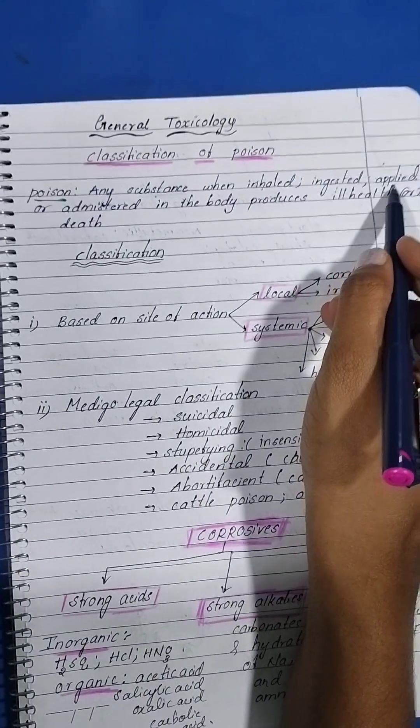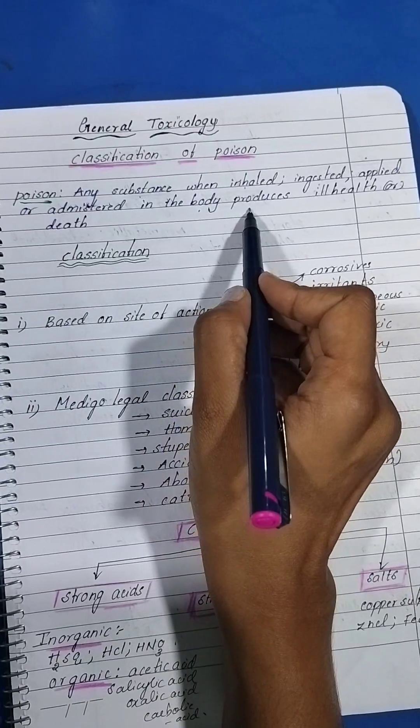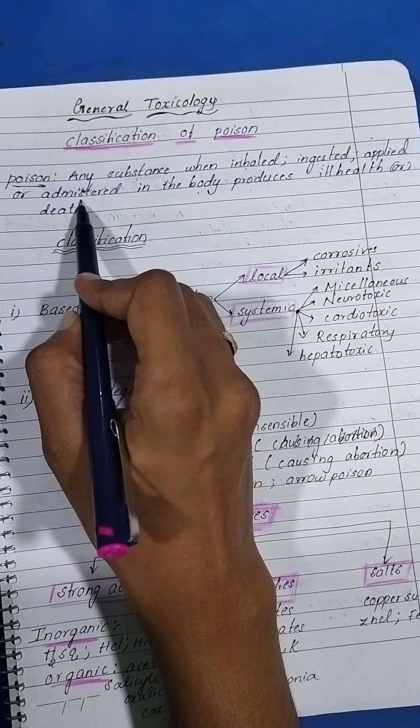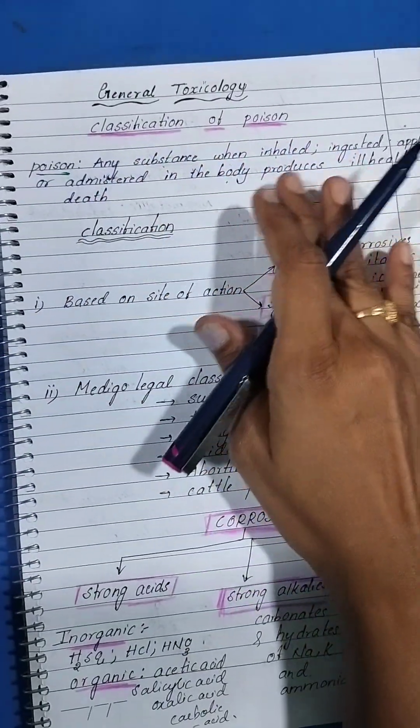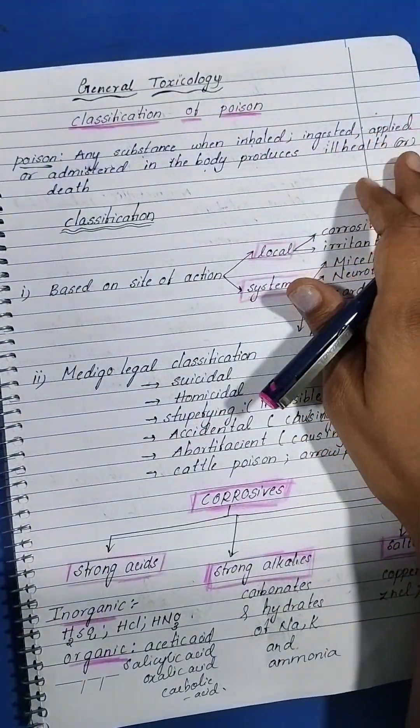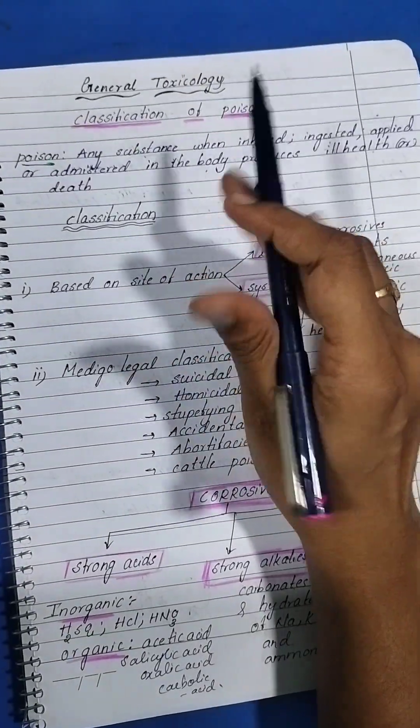ingested, or applied or administered in the body that produces ill health or death. So the definition is very important. Any substance when inhaled, ingested, applied, or administered in the body that produces ill health or death is called poison.